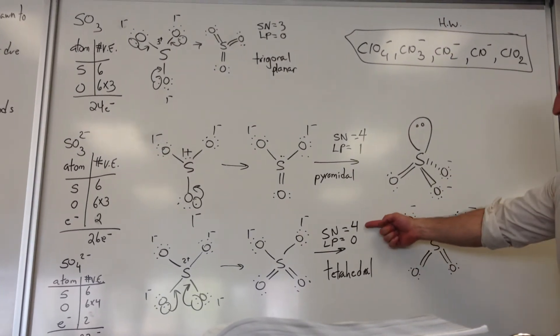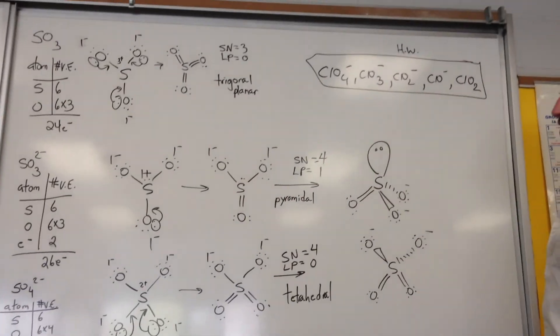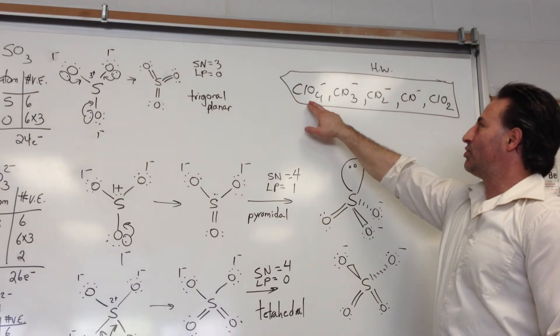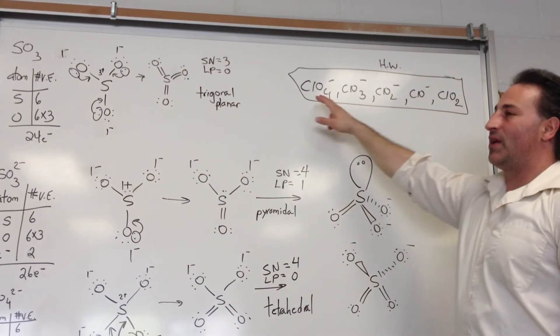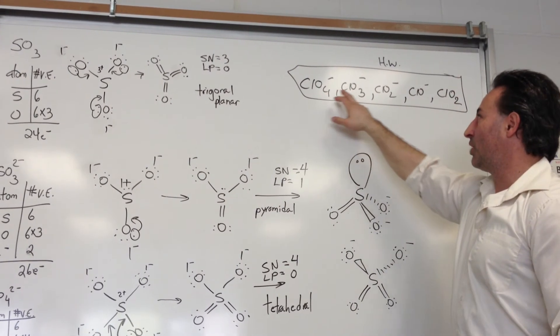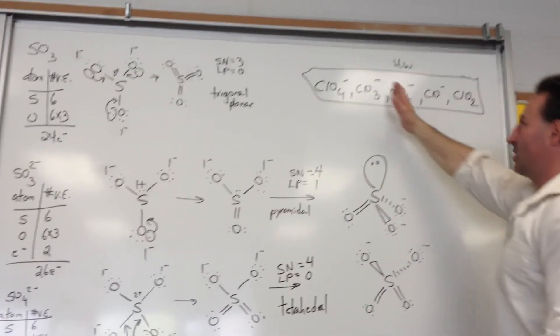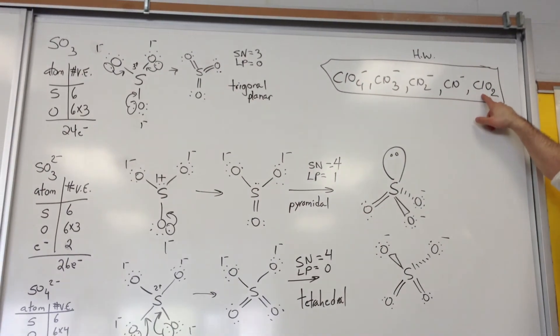Notice that it's tetrahedral because the steric number is 4 and the lone pairs are zero. So for your homework, what you could try then is to draw what VSEPR theory would suggest for the geometry of perchlorate, chlorate, chloride, hypochlorite, and chlorine dioxide. So all these are charged with minus 1. Chlorine dioxide has no charge. That would be a good homework question or exam question.